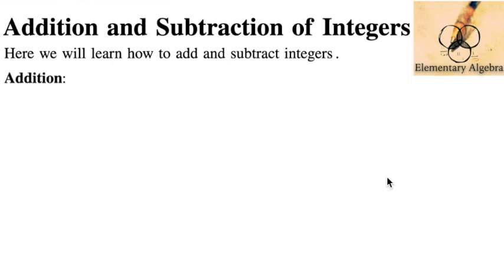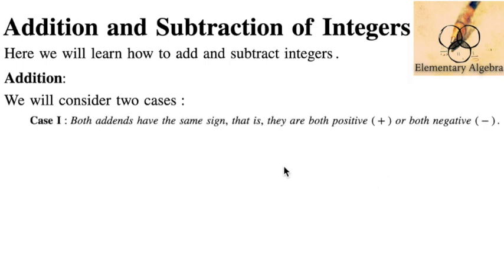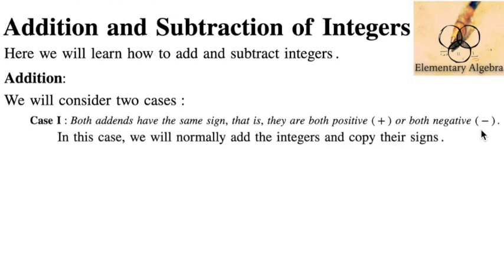In addition, we will consider two cases. For Case 1, both addends have the same sign. When we say addends, these are the two integers that you will be adding, and the result is called the sum. Case 1 is when both addends have the same sign — that is, they are both positive or both negative. If that's the case, we normally add the integers and copy their sign.